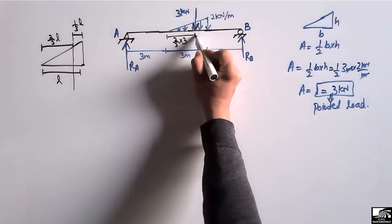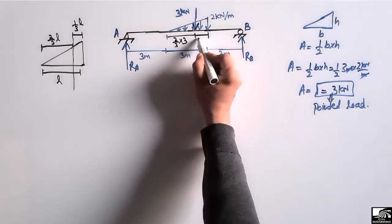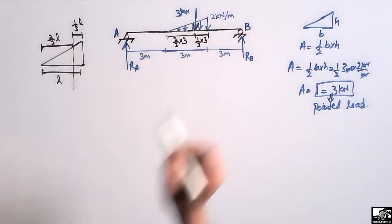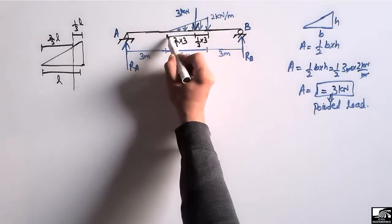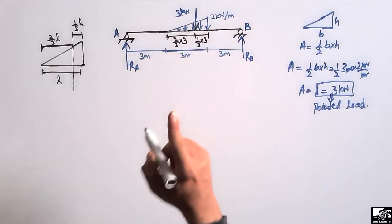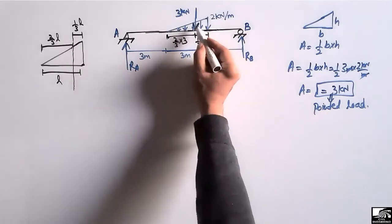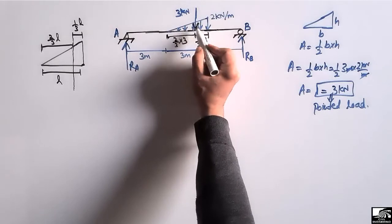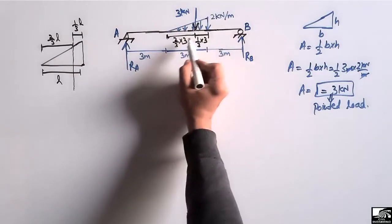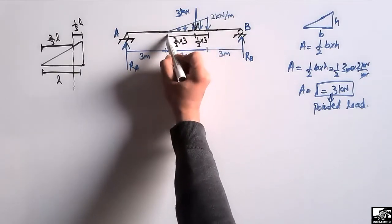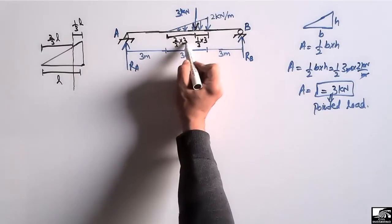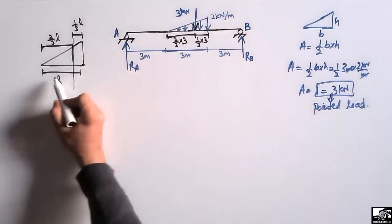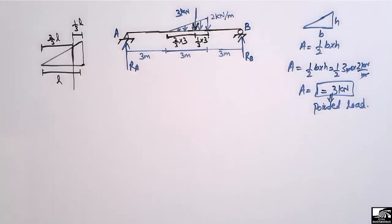So the centroid is where the load will act on this beam. We convert this load into a pointed load of 3 kilonewtons acting at the centroid of this triangle. The centroid is at two-thirds of L, where L is 3 meters. From the start point it is two-thirds of L, and from the end point it is one-third of L.